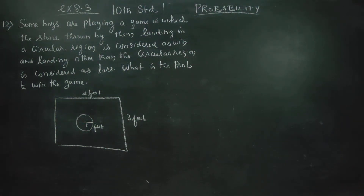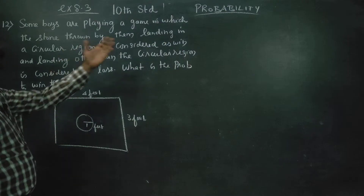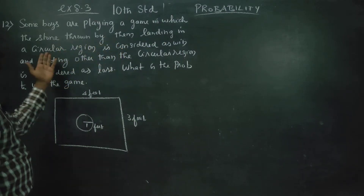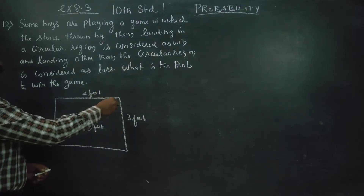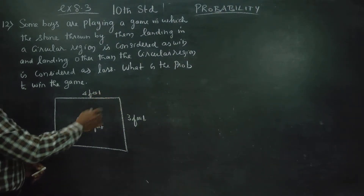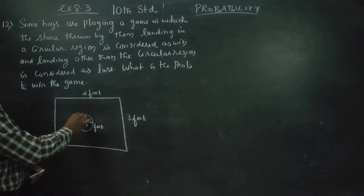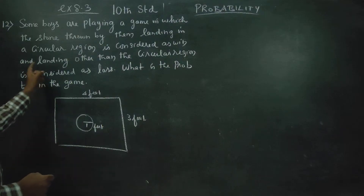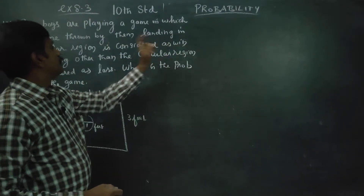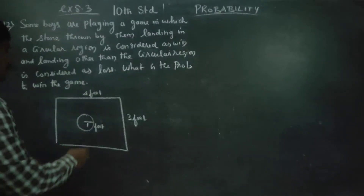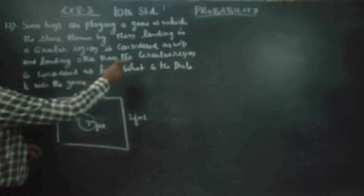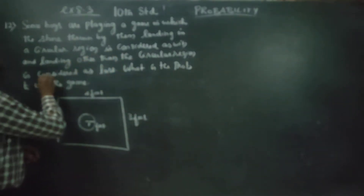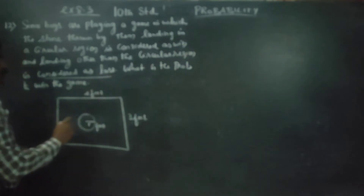Hello students, in sum number 12, some boys are playing a game in which a stone is thrown, landing in a circular region is considered as a win. Landing other than the circular region is considered as a loss. What is the probability of winning the game?